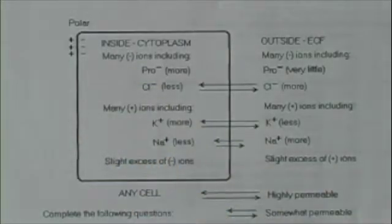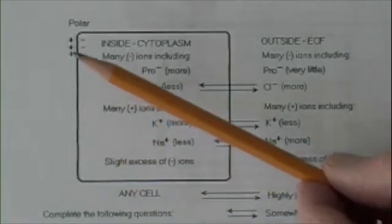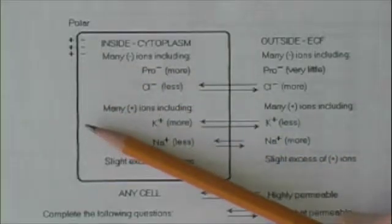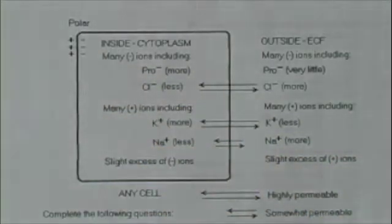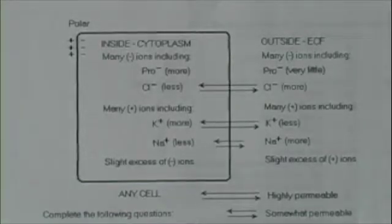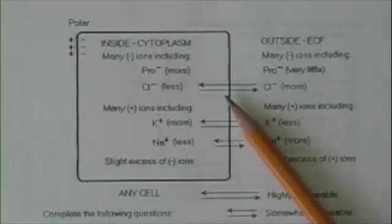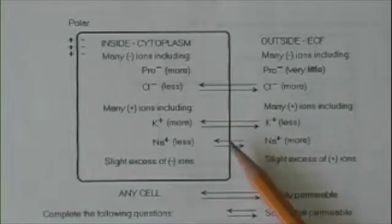Now remember, anything that has opposite ends or opposite sides is polar, like a magnet or the earth. So this membrane is polar, negative on one side and positive on the other. Also remember, ions can be transported across the membrane, to the inside or to the outside.